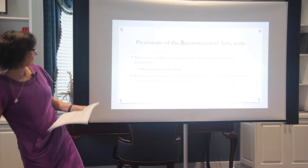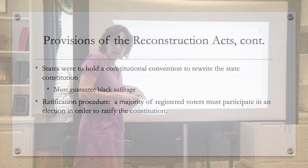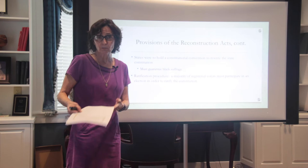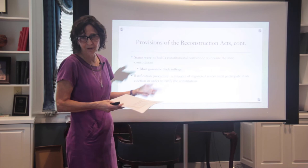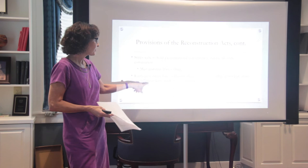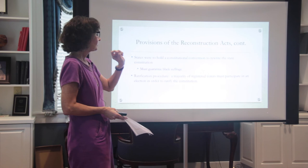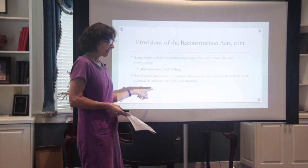States must guarantee black suffrage — significantly different because most northern states at that time did not allow black suffrage. White southerners point out that's a little hypocritical, though nobody really listens much. The ratification procedure requires a majority of registered voters to participate in the election — not just a majority of those voting, but a majority of registered voters. That little loophole is what Alabama is going to take advantage of.